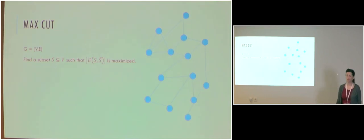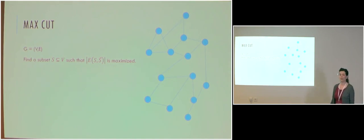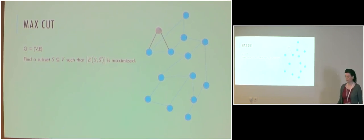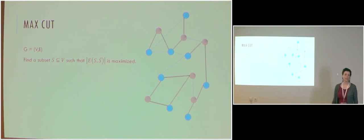Let's start with an example. In the MaxCut problem, we are given a graph, and we seek a subset S of vertices such that the number of edges crossing from S to S-complement is maximized. So if we choose this vertex, then we have two edges in the cut. If the set S consists of a larger number of vertices, then all of the black edges are in the cut.